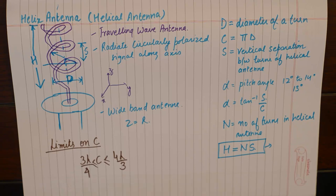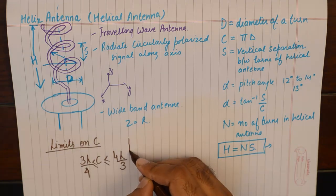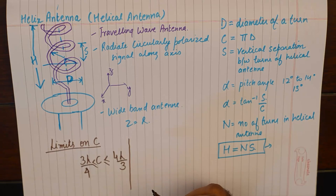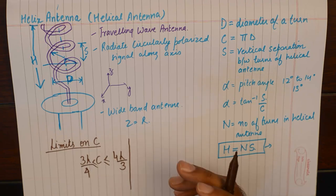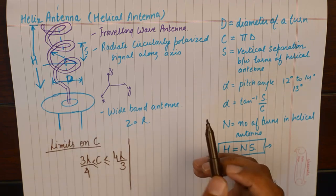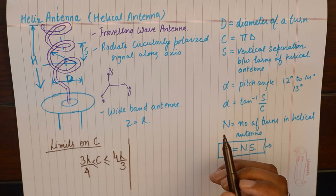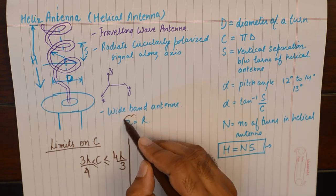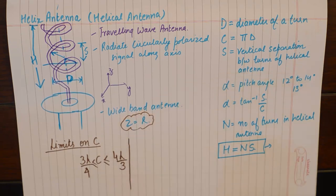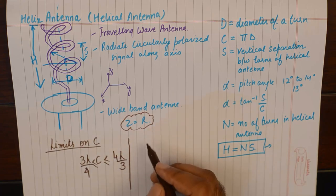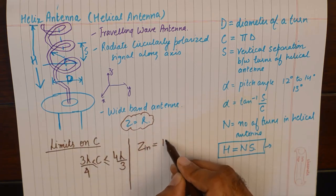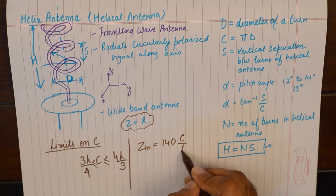Now as I mentioned, it is a traveling wave antenna, which means the current travels along the antenna and the phase varies continuously. I have also mentioned that the input impedance is real. I would like to mention in a note here that the value of input impedance is equivalent to 140C by lambda.